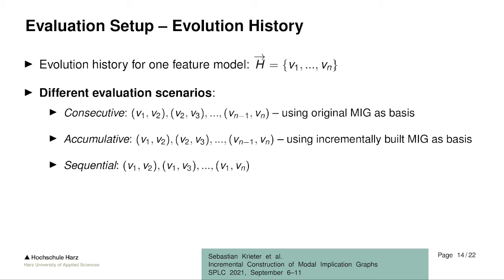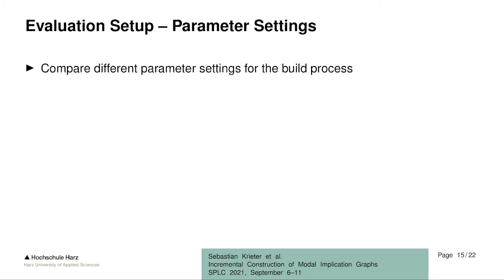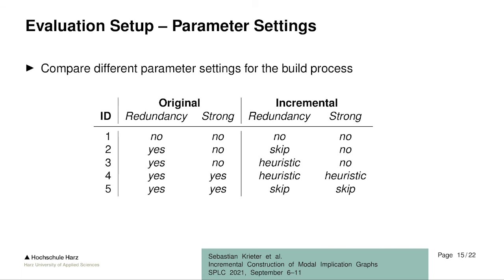We also have five different parameter settings in our implementation and evaluation. In the original build process, we can skip finding redundancies and strong edges — but if we do, we can't use those results in the incremental process and must skip them there too. If we do use them, we have the option of skipping the operation or using heuristics in the incremental process, and these are the different parameter settings we evaluate.